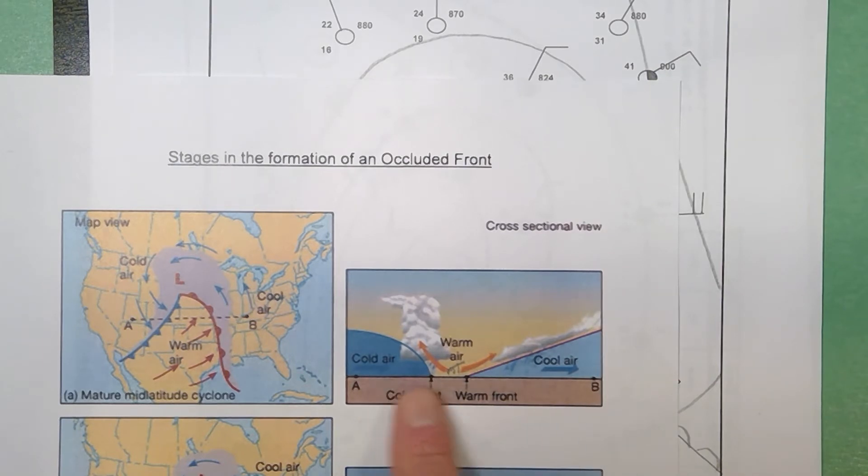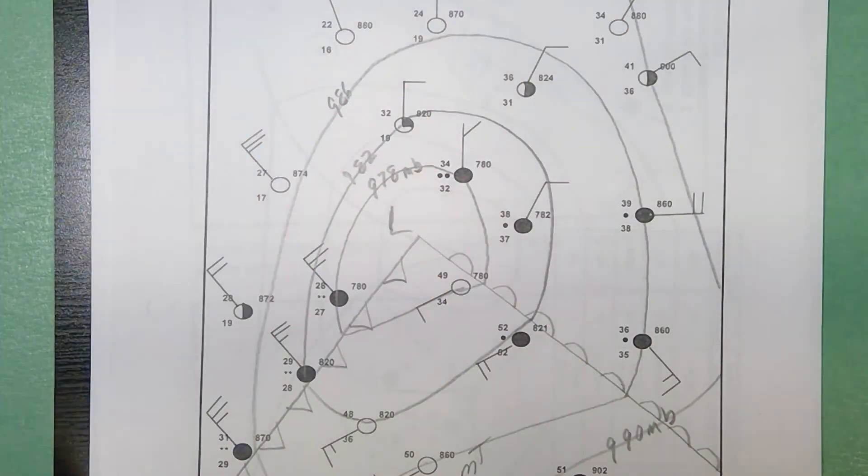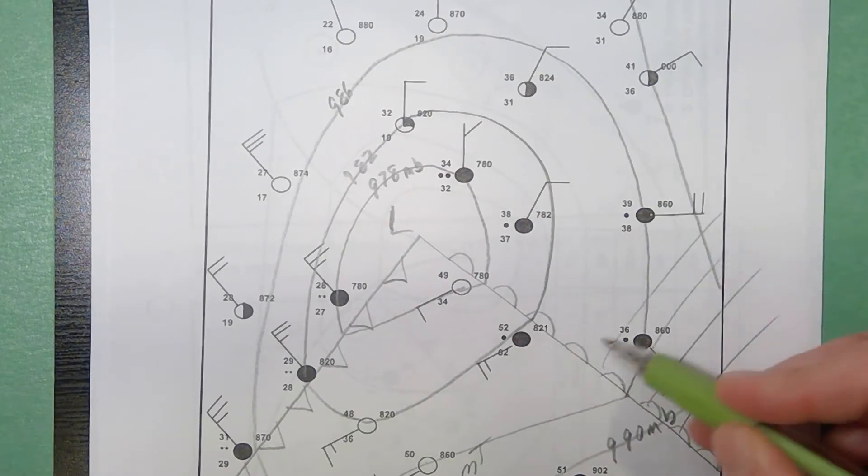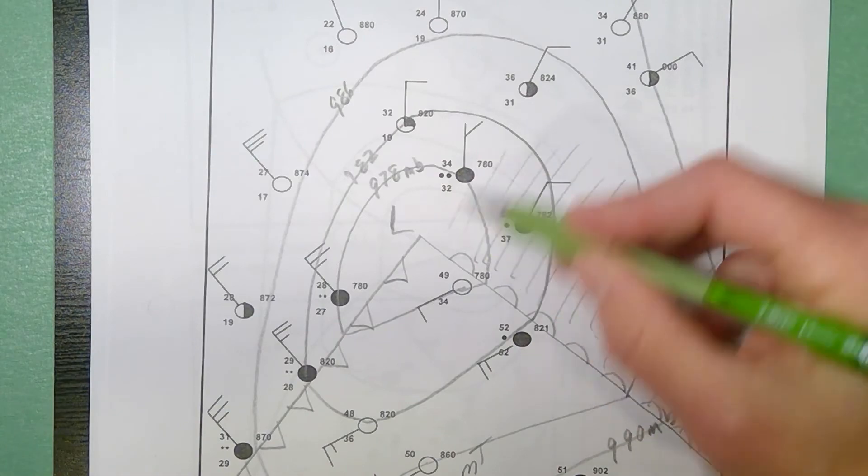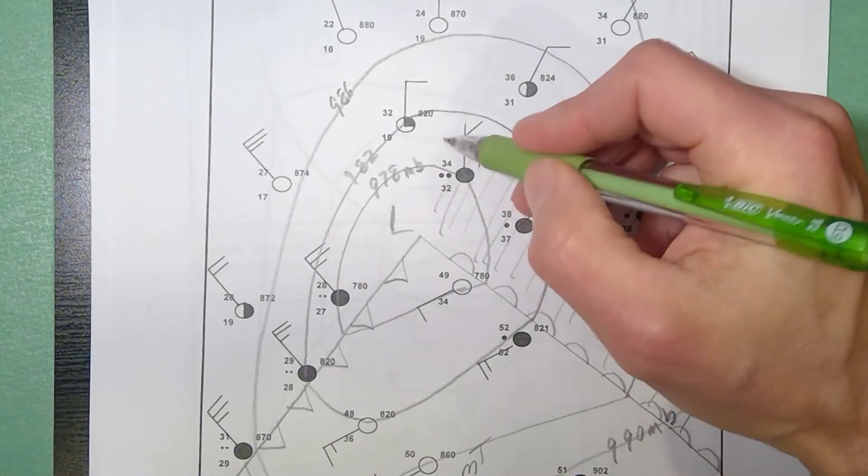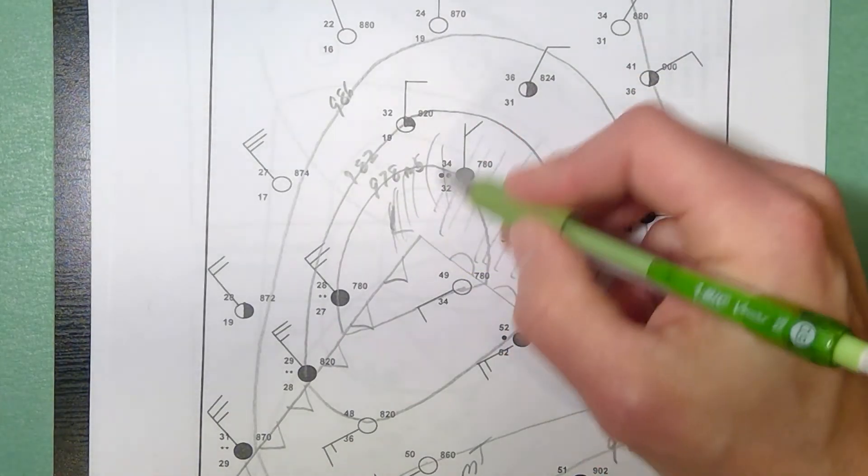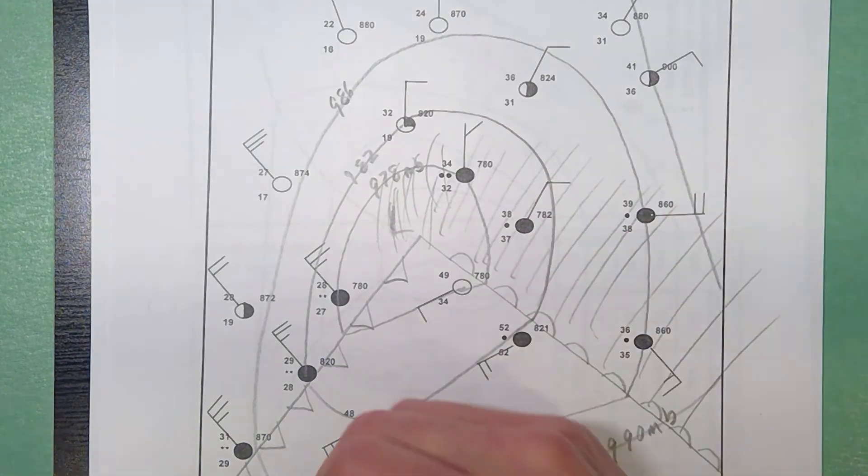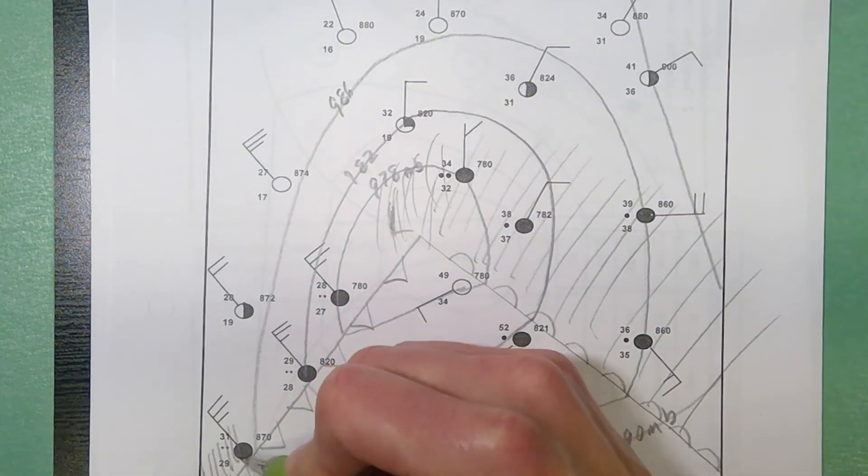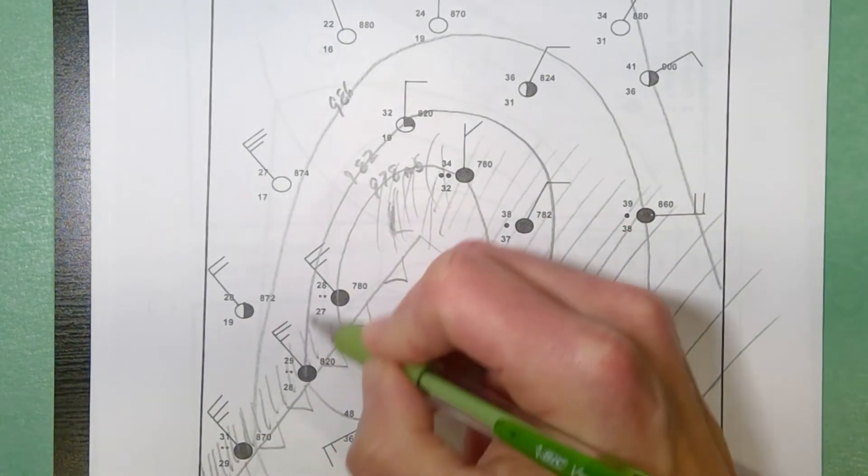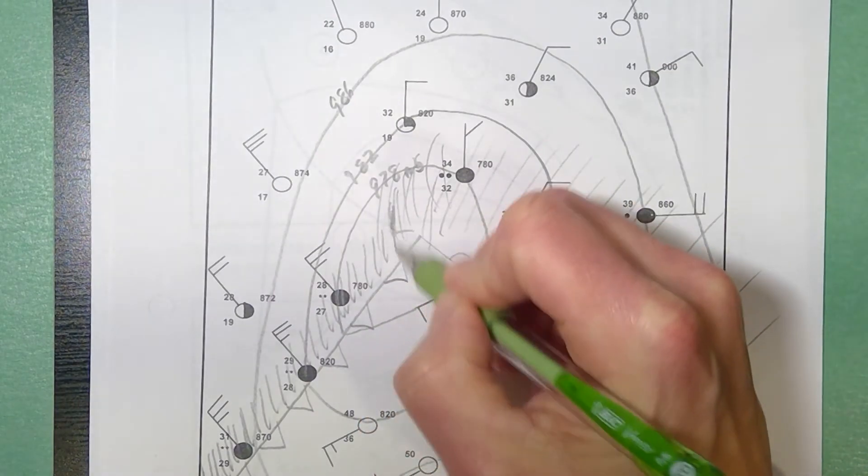Short and heavy for a cold front, slow and steady for the warm front. So on this map, if I'm shading in the areas, you're going to get a broad area of precipitation out here ahead of your warm front. The rain wraps around your low because the air rises in the center, but then you get a short, heavy band of precipitation along the cold front.